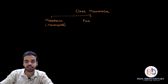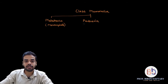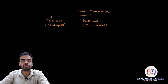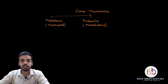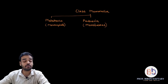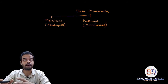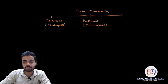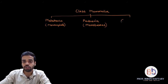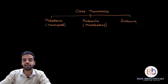The second subclass is called Protheria, also known as monotremes. Monotremes are all egg-laying mammals. Most mammals are viviparous, giving birth directly to young ones, but some — like the platypus or duckbill — are egg-laying and fall under Protheria.